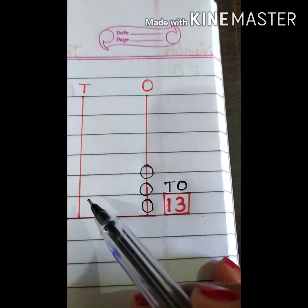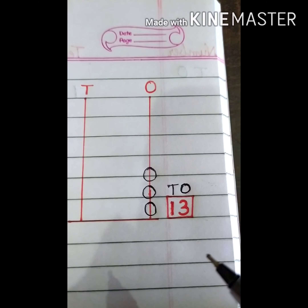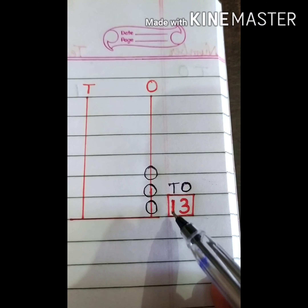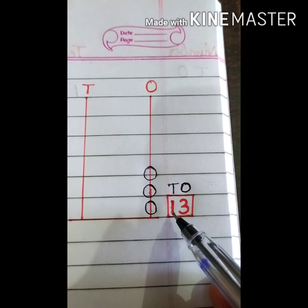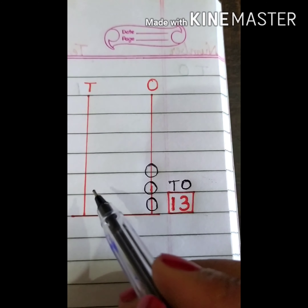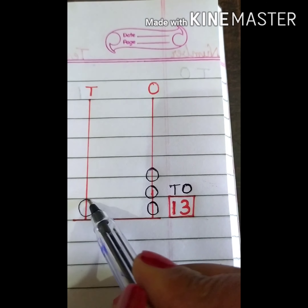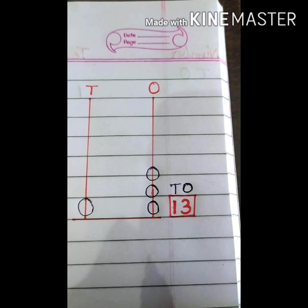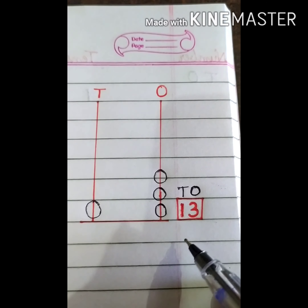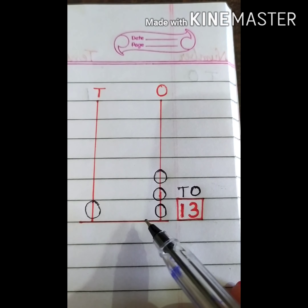Now we will draw beads in the tens place. Which number is at tens place? It is number 1, so we will draw only one bead here. So we have drawn the beads and shown number 13 on the abacus.